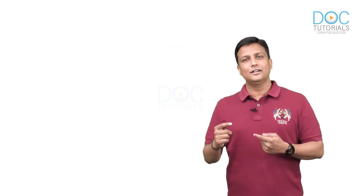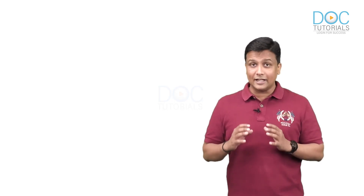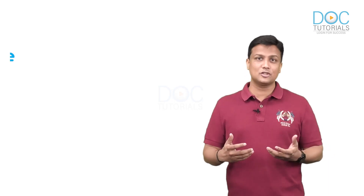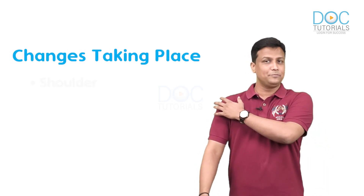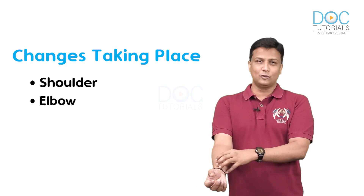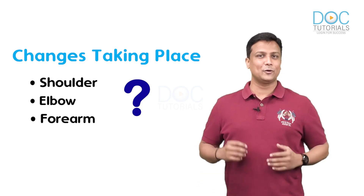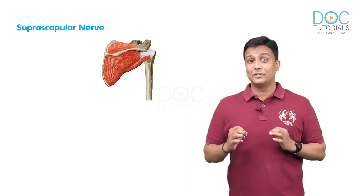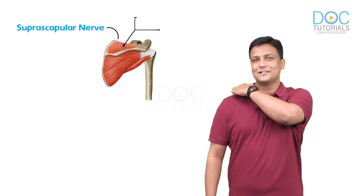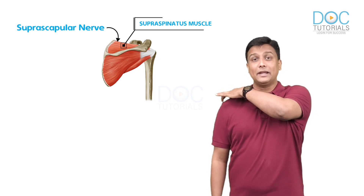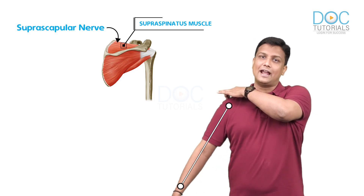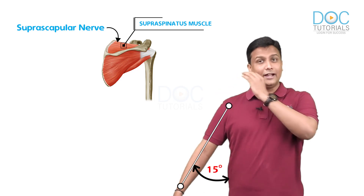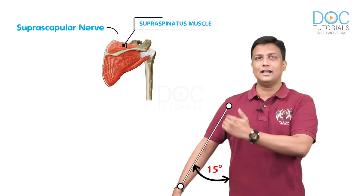First understand the normal anatomy, then you can apply that to see the abnormality occurring here. In Erb's Paralysis we need to see the changes at the shoulder, the elbow, and the forearm. The suprascapular nerve supplies the supraspinatus muscle, which helps in 0 to 15 degrees of abduction — it initiates abduction of the arm.